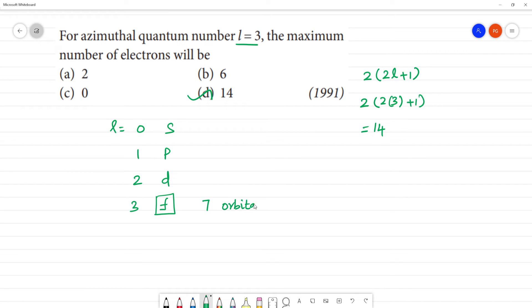One orbital has how many electrons? 2 electrons. So totally that will be 14 electrons. Clear? If we have the formula, the answer is 14.